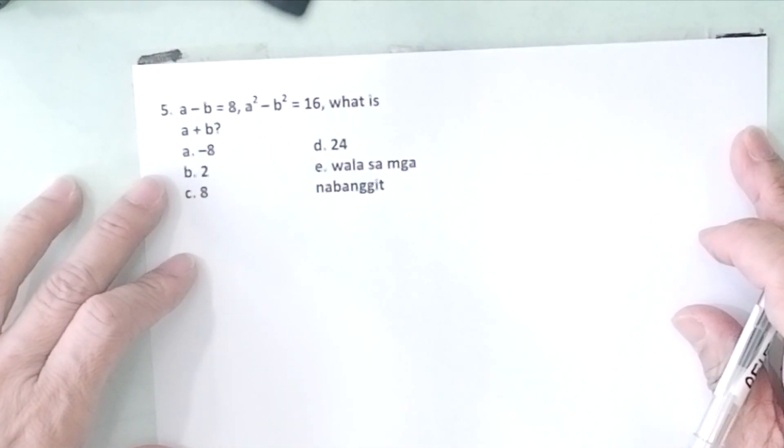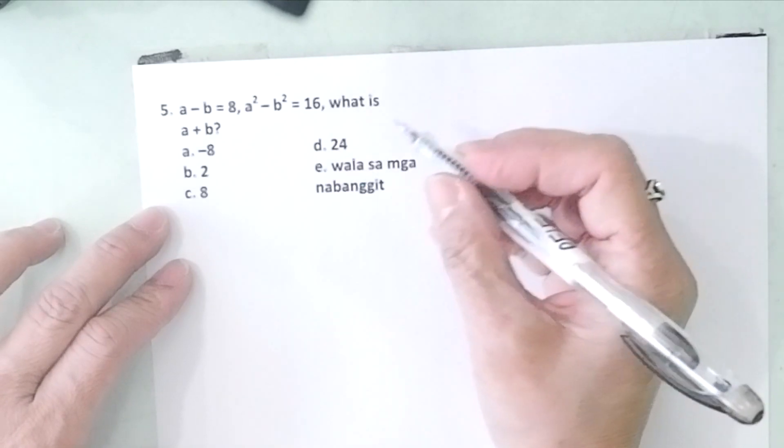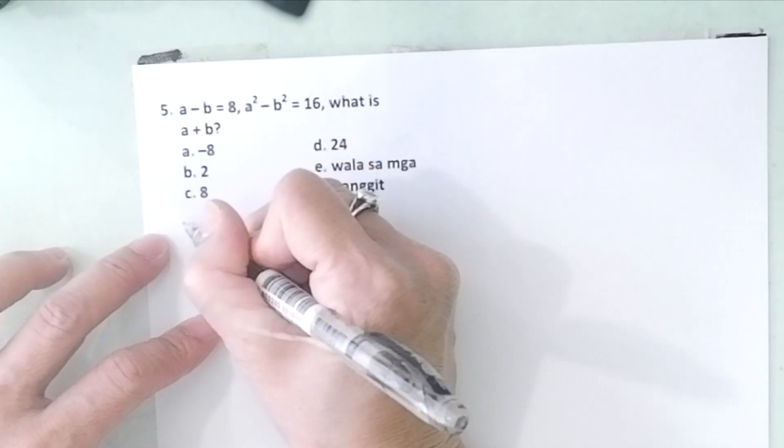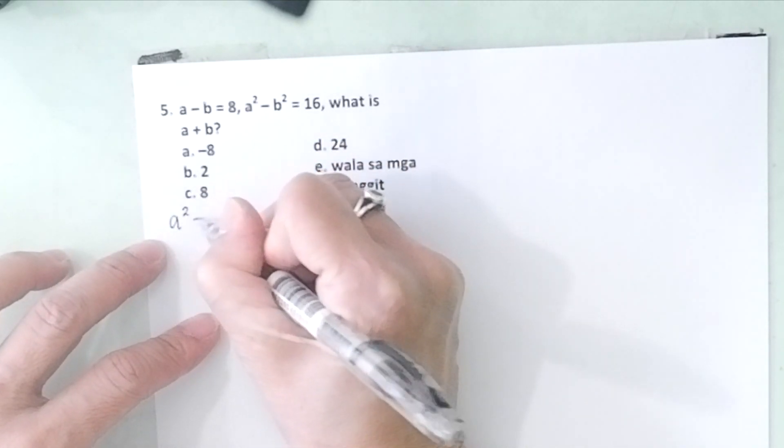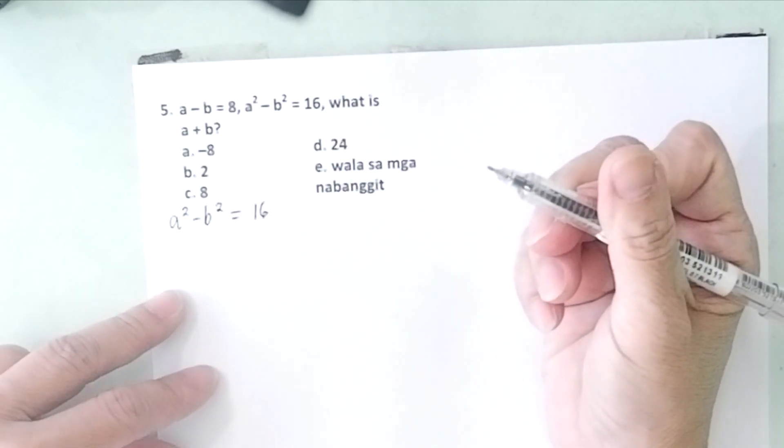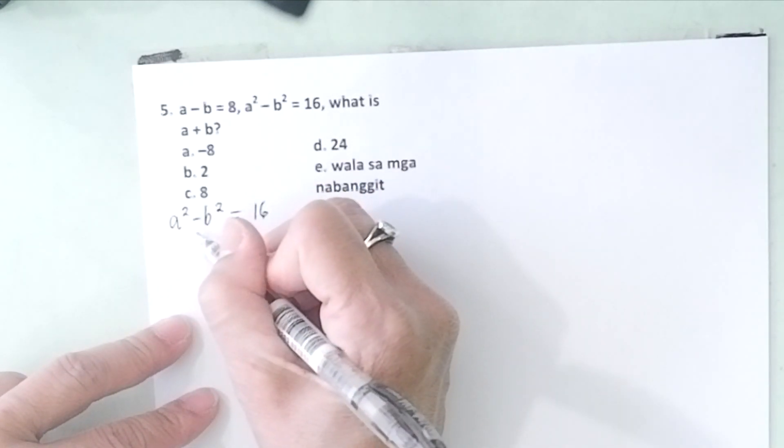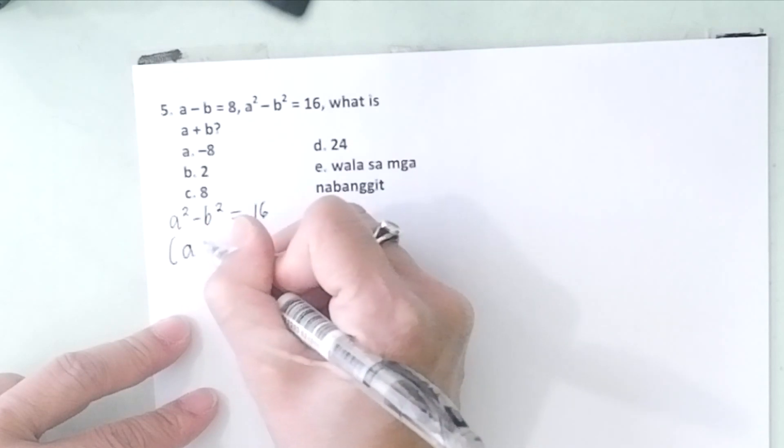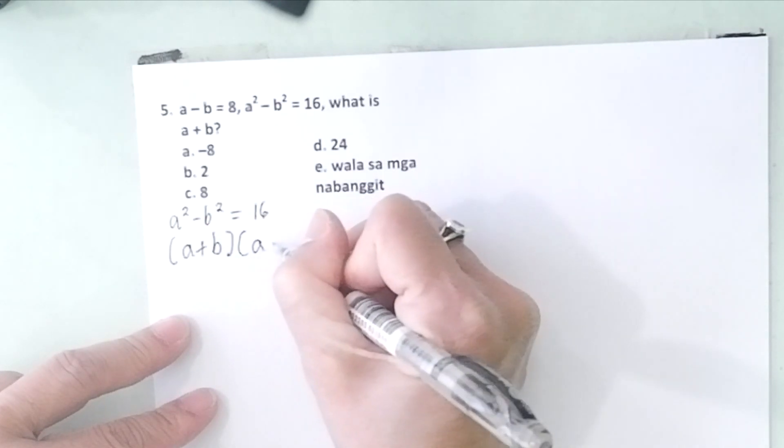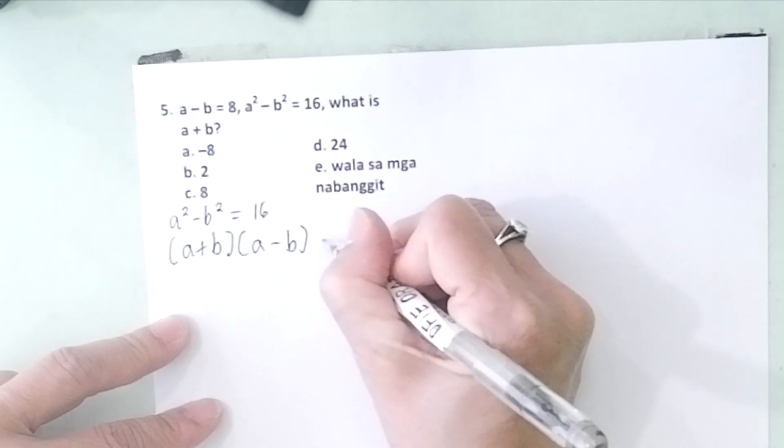Problem number 5: a - b = 8, a² - b² = 16. What is a + b? Take note that a² - b² = 16 is factorable as a difference of two squares. So you factor this. You learn that it can be factored as (a + b)(a - b) = 16.